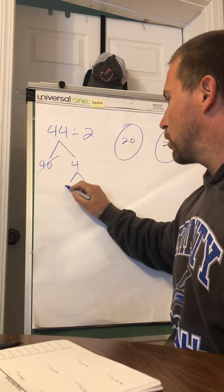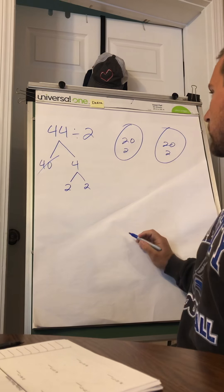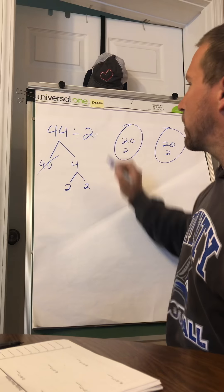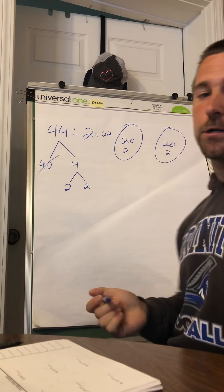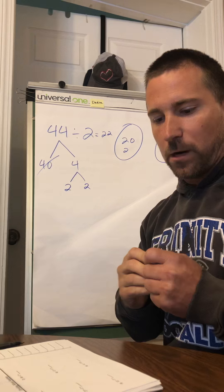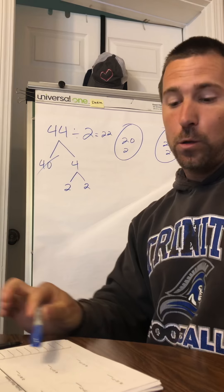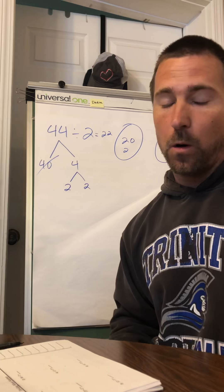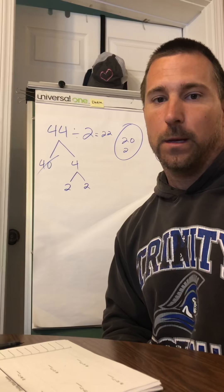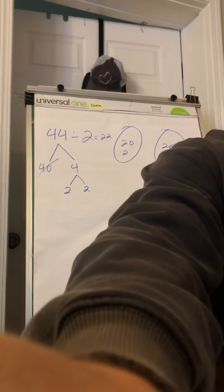Well, you could skip count to figure that out. You could literally just skip count by 2s until you hit 44. Or you could think, well, I know that 2 times 20 equals 40, right? So that's 20. And I know I would need two more 2s for that 4 in the ones place. So I can see 2 times 20 is 40, 2 times 2 is 4. So I would need 22 twos to equal 44, right?